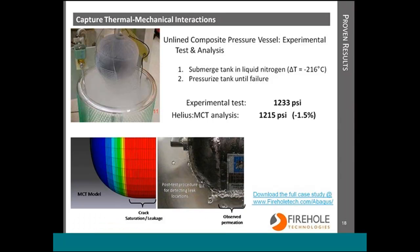The location was also predicted correctly using Helios MCT. At the bottom right I have a post-test procedure for leak detection — you can see bubbles coming through the wall of the tank — and the contour plot shows the crack saturation prediction. Traditional analysis over-predicts this failure by more than 100 percent. But if you think back to the simple example of the unconstrained cooling of the unidirectional composite presented earlier, the fact that the traditional analysis neglects these interactions is why it can't realistically simulate what's going on in this experiment.